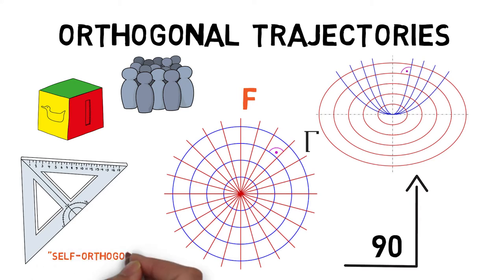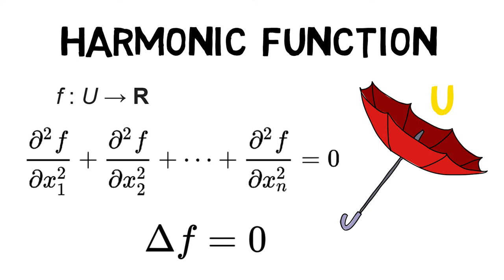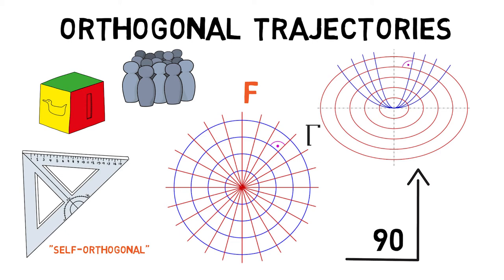In case the family capital F1 and capital F2 are identical, we say that the family is self-orthogonal. Hence we first saw what harmonic functions are and then went on to see what orthogonal trajectories are.